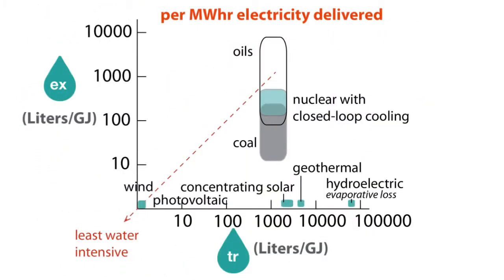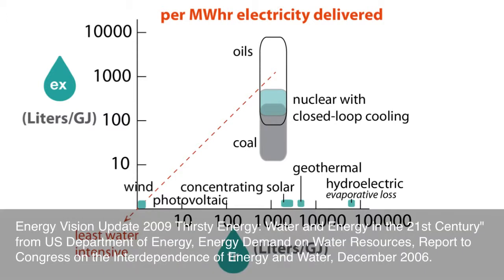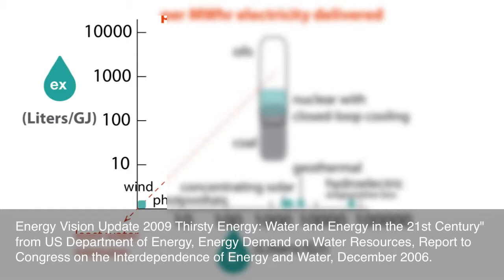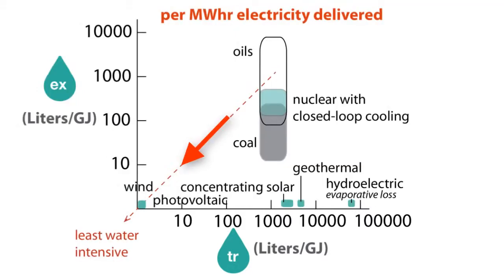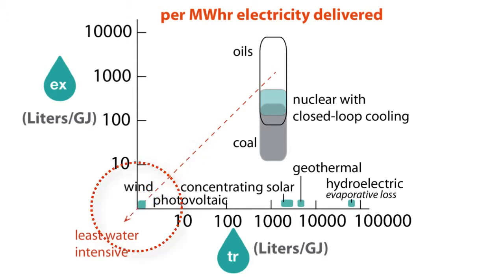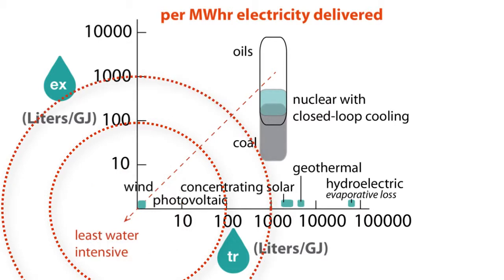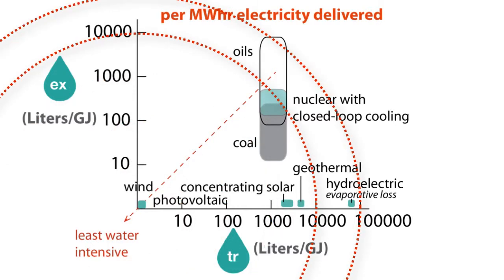Here is a look at the use of water to extract and transform energy resources to electricity. The vertical axis represents the liters of water per gigajoule of energy extracted. The horizontal axis represents liters of water per gigajoule of electricity transformed. Energy resources in the bottom left represent the least water used in the combined processes. You can think of processes lying on an arc of equivalent radius as being equivalent in the amount of water used per gigajoule of electricity produced.